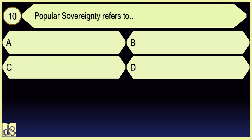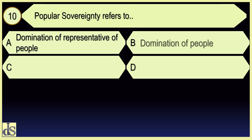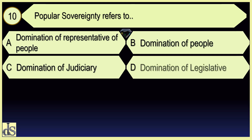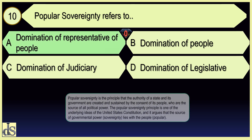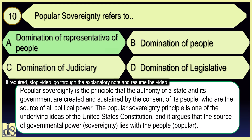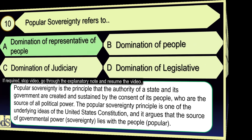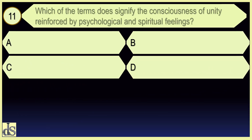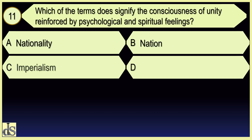Popular Sovereignty — sovereignty refers to the domination of representative of people. Which of the terms signifies the consciousness of unity re-enactment? Sovereignty is reinforced by psychological and spiritual feelings. Nation.